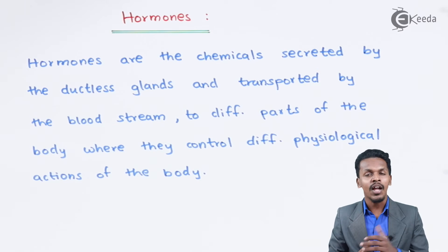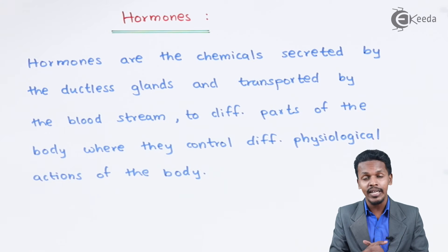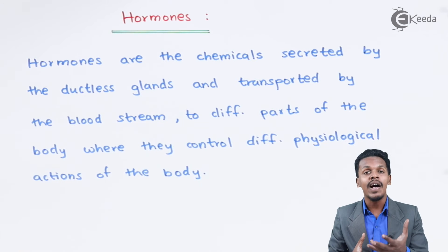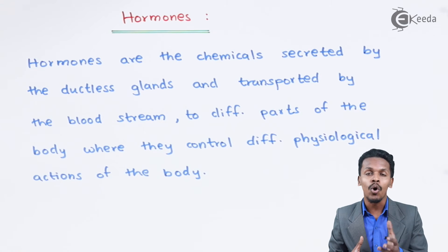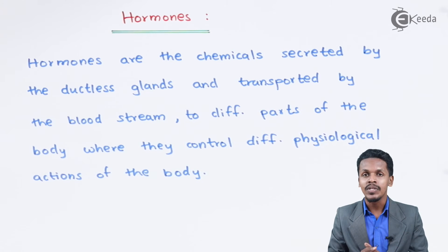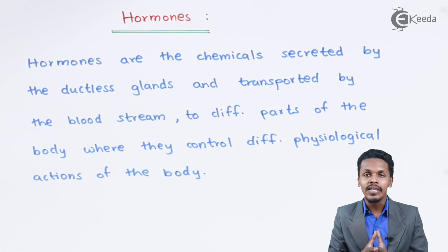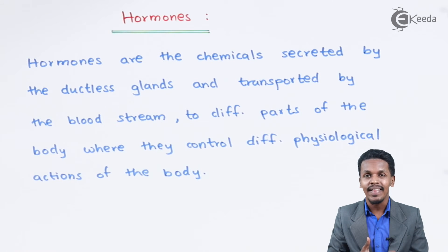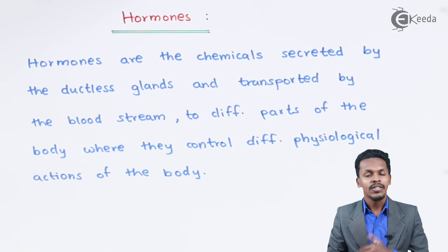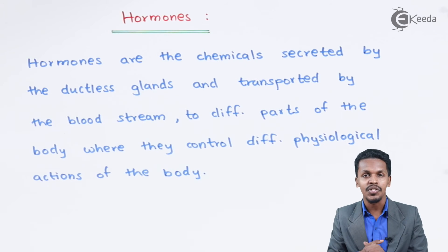Talking about other hormones — adrenaline and noradrenaline — these are derivatives of amino acids and are themselves hormones. Their main function is to increase the metabolism of glucose in the body, and that is how they are very important.